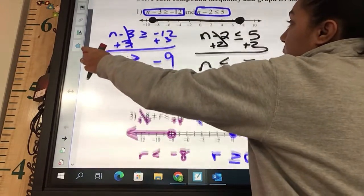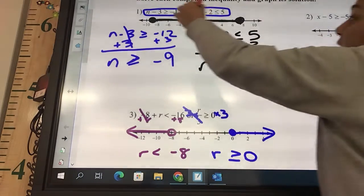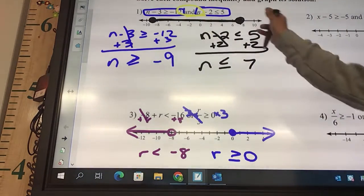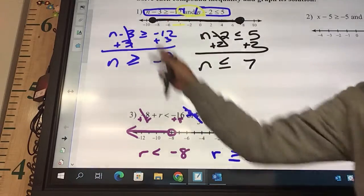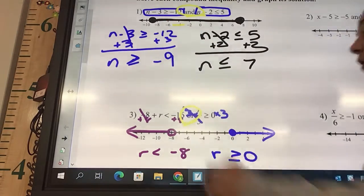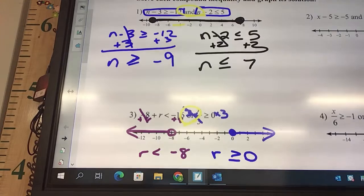We can just look at the difference between these two. This one is an and. See how they're both pointed in? We're shaded in between. This one is an or. And they're both pointed out. That's how they should look. You don't need to read it. You know what they should look like. Ands go in. Ors go out.